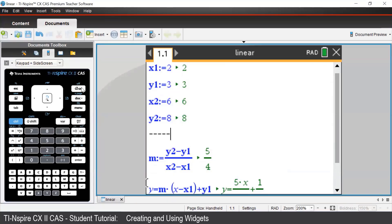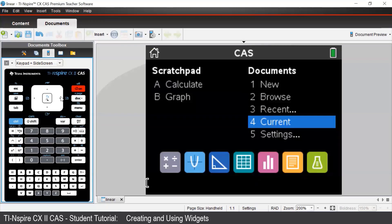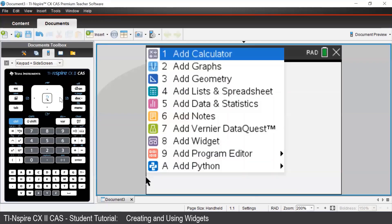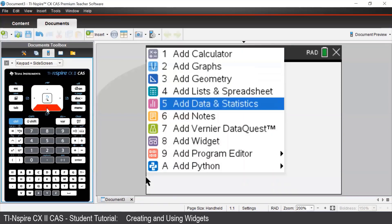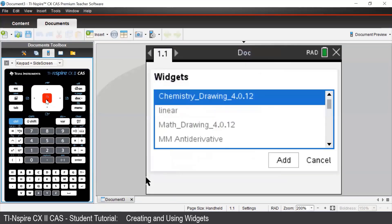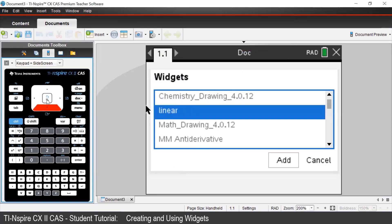We'll now open up a new document and see how we can access our widgets. If you want to insert a widget, we can select the add widget option. And there's our widget that we just made for linear.